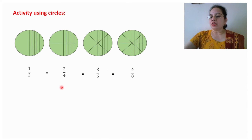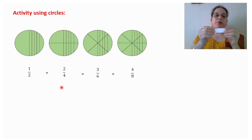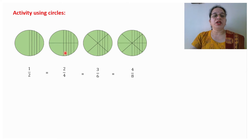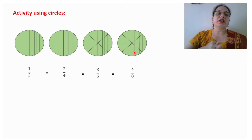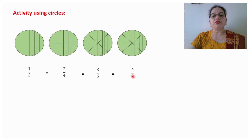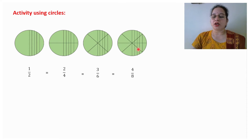The same activity, instead of rectangular strips, you can do using circles as well. You can cut out a circle and fold it in half, then fold it again, and again. By this paper-folding activity with circles you can do the same thing. Here also you can see that the fractions are different but everywhere the shaded part is the same — such fractions are known as equivalent fractions.